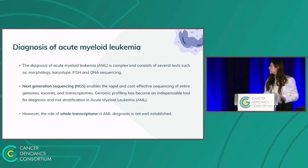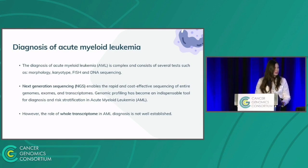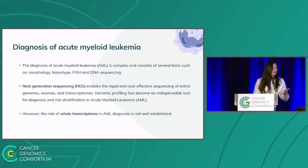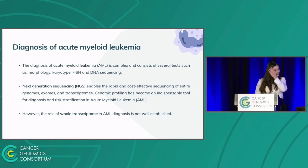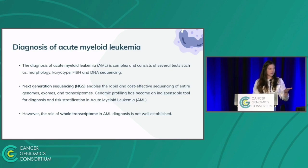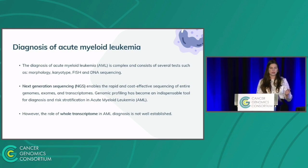Diagnosis of acute myeloid leukemia is complex and consists of several tests, such as morphology, karyotype, FISH, and DNA sequencing. The arrival of next-generation sequencing enables the rapid and cost-effective sequencing of entire genomes, exomes, and transcriptomes.